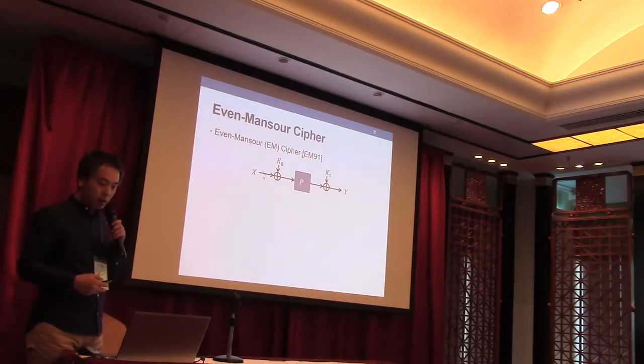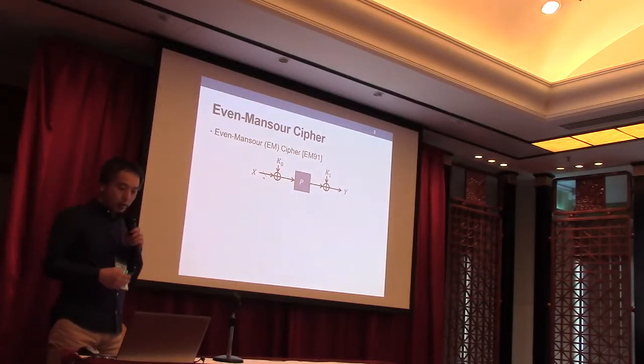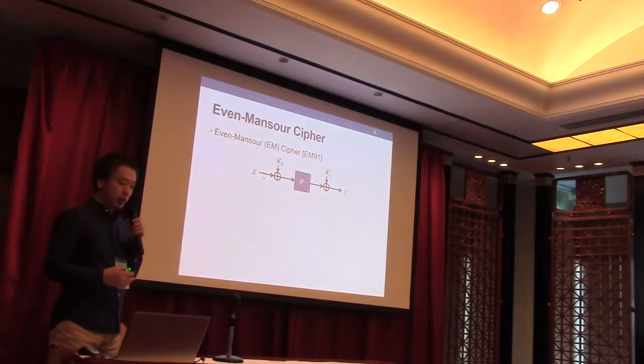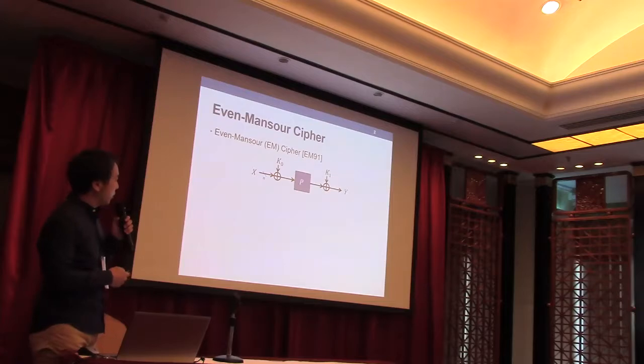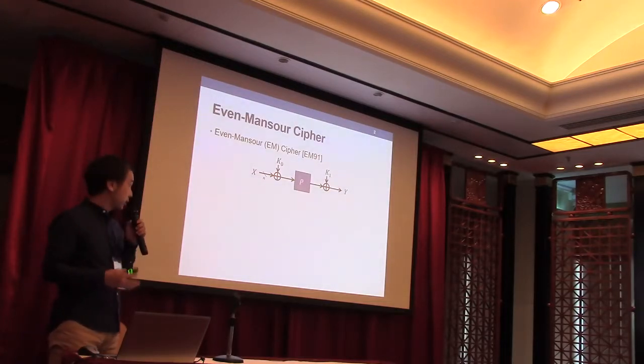We focus on Even-Mansour Cipher in this work, proposed in 1991. It is known as one of the simplest block cipher designs, which consists of one fixed public permutation key and two key additions before and after the permutation.